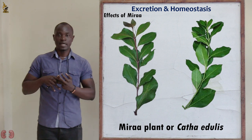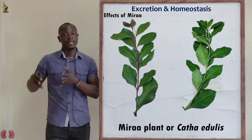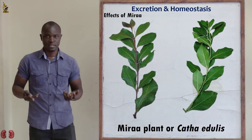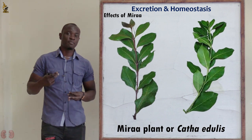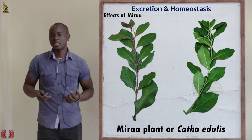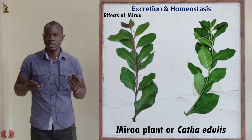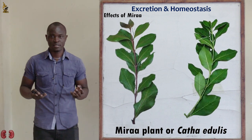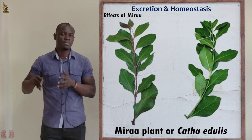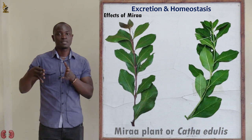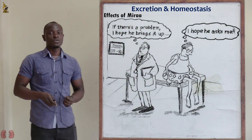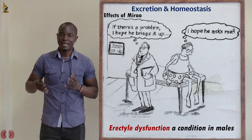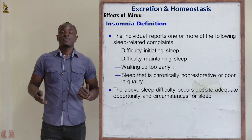On the negative side, mirror may cause miscarriage in pregnant women. It may also cause male impotence — a condition where the male penis cannot erect, preventing sperm deposition during intercourse. This condition is referred to as erectile dysfunction.